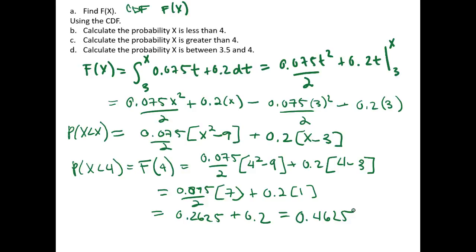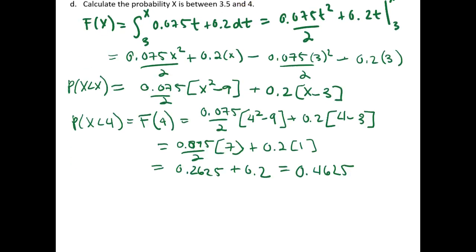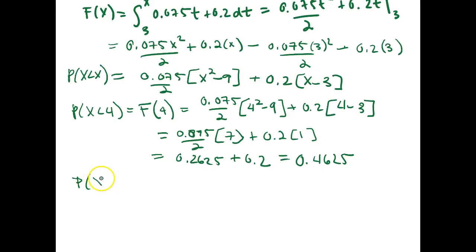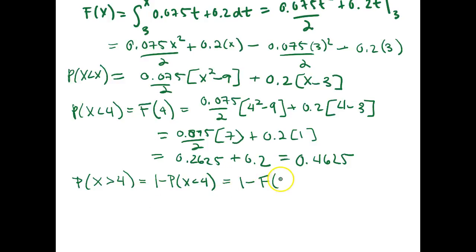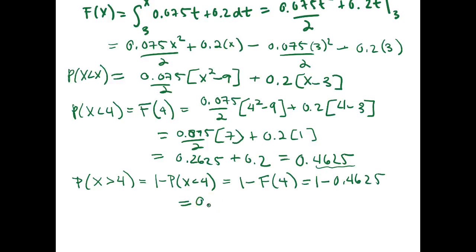For part c, calculate the probability that x is greater than 4. We can write this as 1 minus the probability that x is less than 4, because we want to use the CDF. So this equals 1 minus F of 4. We just calculated F of 4 equals 0.4625, so this is equal to 1 minus 0.4625, which gives 0.5375.